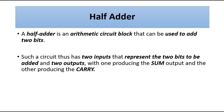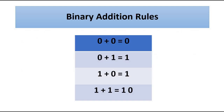So basically you will have half and full adder and half and full subtractor. Here we'll be discussing the half adder circuit. Before discussing the half adder, a quick review of the binary addition rules. In binary addition we have four rules: 0+0=0, 0+1=1, 1+0=1, and 1+1=0 with a carry of 1.